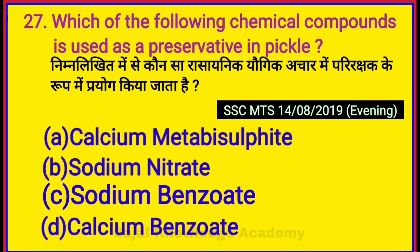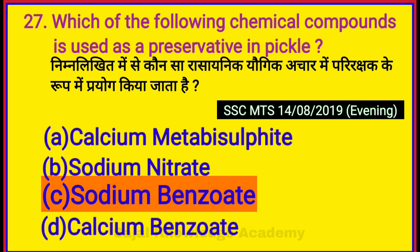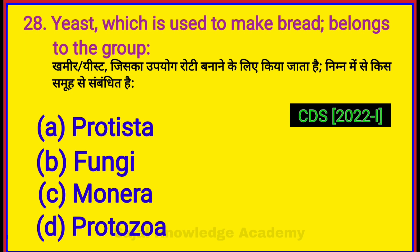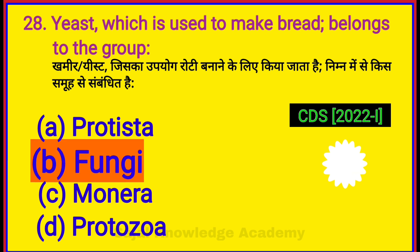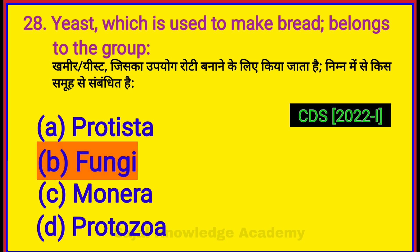Which of the following chemical compounds is used as a preservative in food? Option C: Sodium benzoate. Yeast used to make bread belongs to which group? Option B: Fungi.